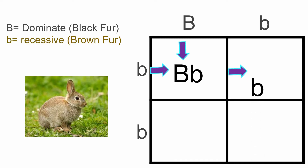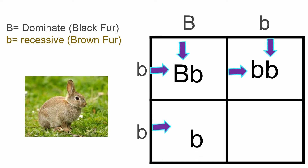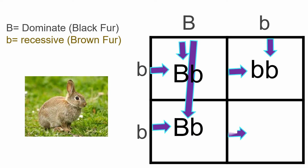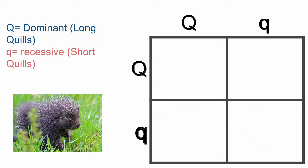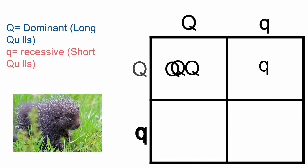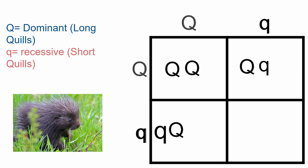Capital letter for a trait that's dominant. Phenotype is what's observable or prominent. Punnett squares, they're the key to understanding genetics as easy as can be. From dominant to recessive, we can see how traits are inherited, it's a guarantee.